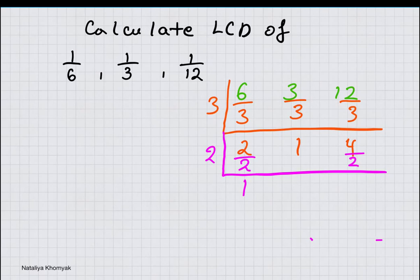So we have 1, 1, 2. And the least common denominator will be 3 times 2 times 2 which is 12.